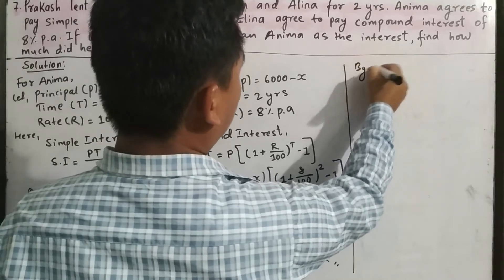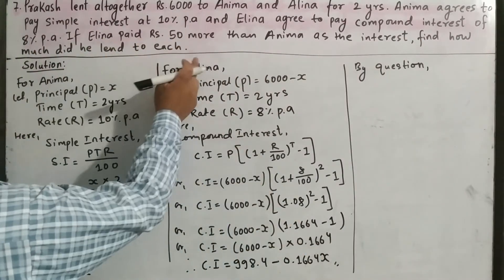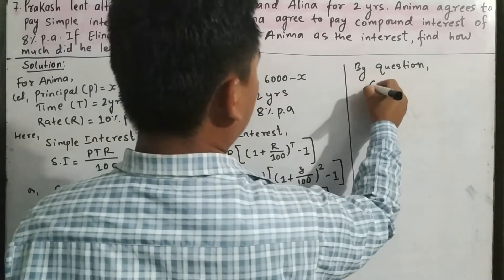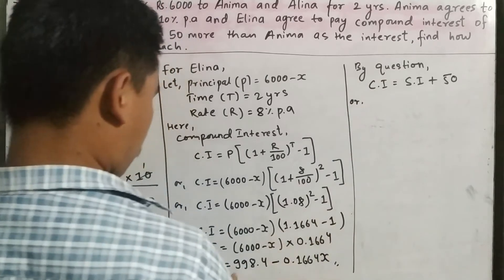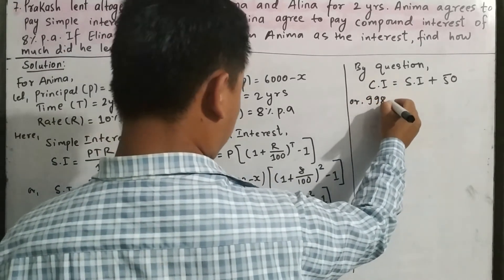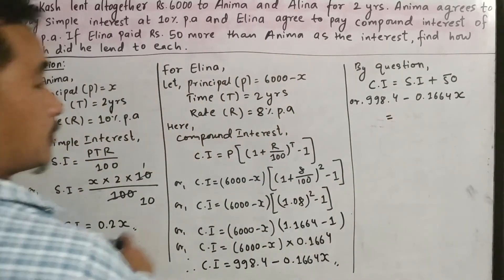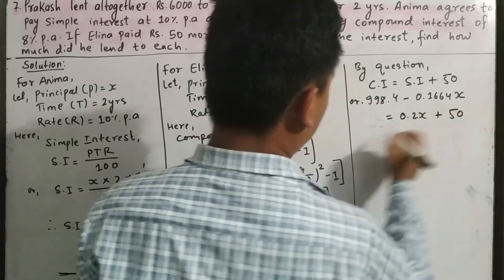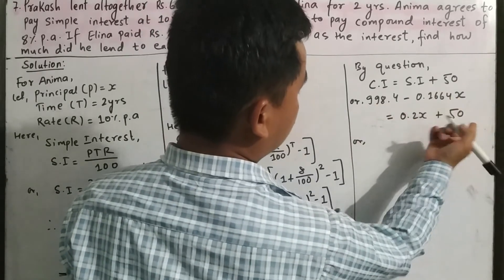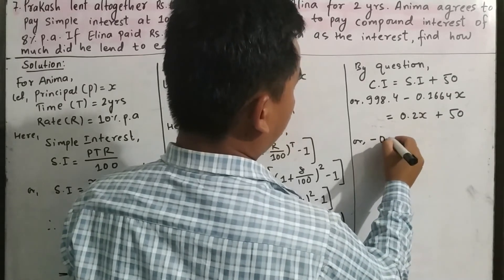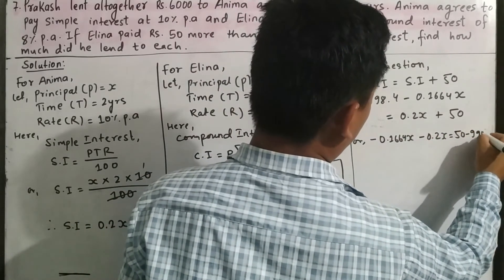By the question, Elena paid rupees 50 more, meaning compound interest equals simple interest plus 50. So 998.4 minus 0.1664x equals 0.2x plus 50. Bringing all variable terms to one side and constants to the other: minus 0.1664x minus 0.2x equals 50 minus 998.4.